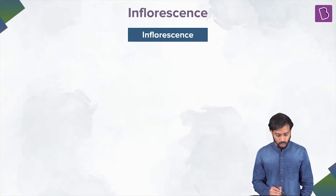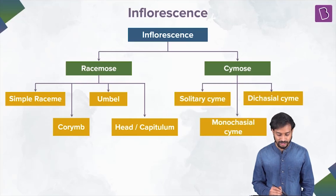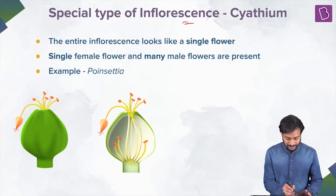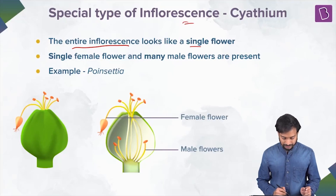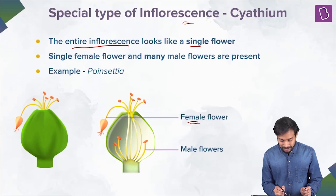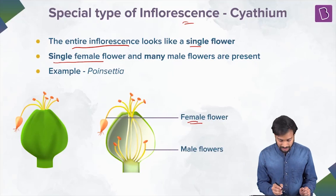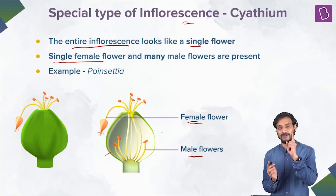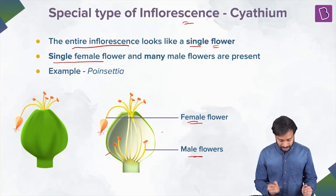So we discussed racemose types — simple raceme, corymb, umbel, and head — and cymose types — solitary, monochasial, and dichasial cyme. Now for special types: cyathium is where the entire inflorescence looks like a single flower. It consists of a single female flower and many male flowers, but together it looks like one single flower.